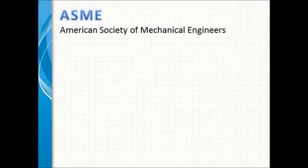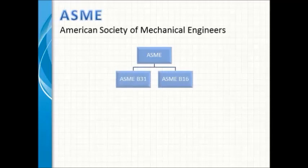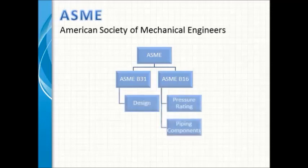ASME is a very critical and important code used in piping and piping engineering. It is split into two main subcommittees used in piping: ASME B31 for pressure piping, and ASME B16 for components — making standards for fittings, valves, gaskets, flanges, and everything else. We can call ASME B31 a design code and B16 covers pressure rating and piping components.